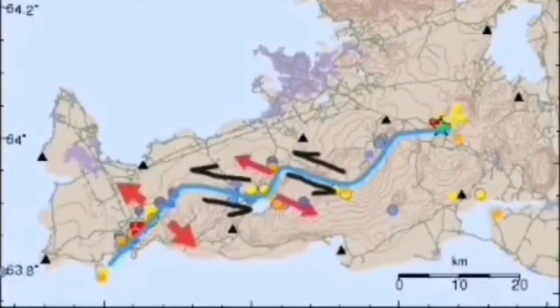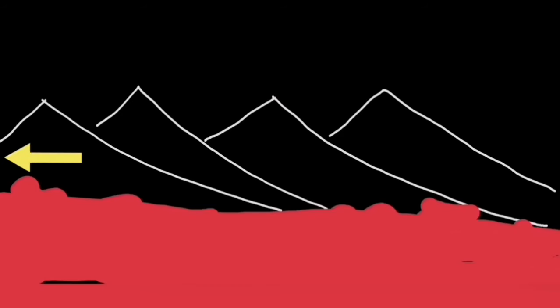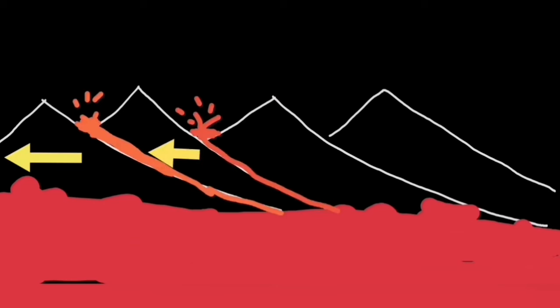These are different systems we call them. Krýsuvík system is the one that we are talking about now. So like a domino effect, when one moves, lava erupts through that fault line.